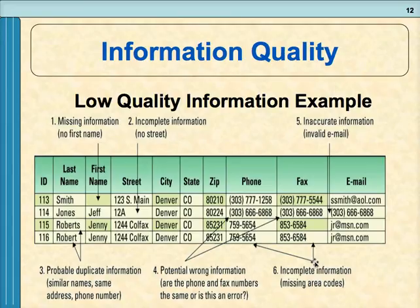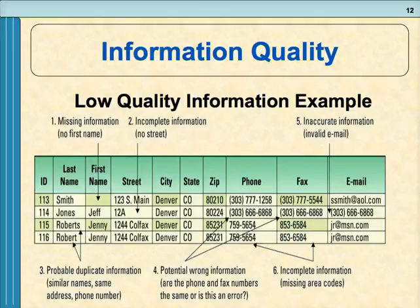Another example of incomplete information: some customers have full phone numbers with area codes, but for one customer there's no area code. In Southern California alone there are multiple area codes, so a phone number without an area code means you probably can't reach that person. This illustrates some of the real-world examples of low-quality information we've been discussing.